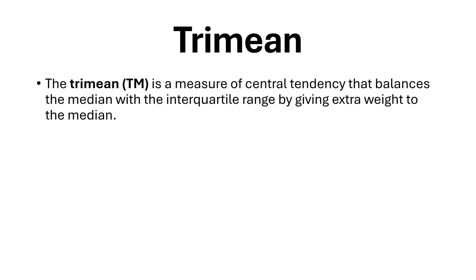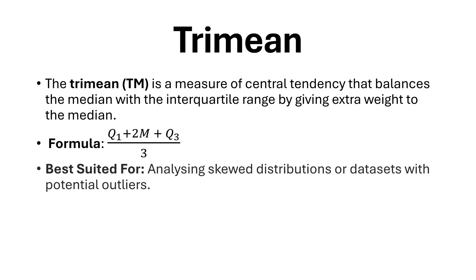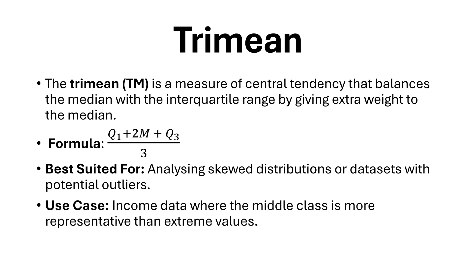The tri-mean is a measure of central tendency that balances the median with the interquartile range by giving extra weight to the median. The formula is as shown. Best suited for analyzing skewed distributions or datasets with potential outliers. Use case: income data where the middle class is more representative than extreme values.